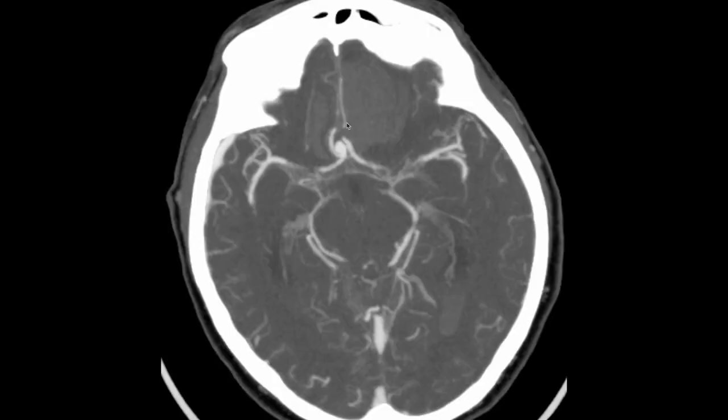A CT angiogram was done in this patient, confirming a traumatic pseudoaneurysm close to the ACOM where the A2 segment of the anterior cerebral arteries are. This typically happens close to the falx or tentorium because during the trauma mechanism, those arteries get sheared against the dural folding, and that's how the traumatic pseudoaneurysm develops.